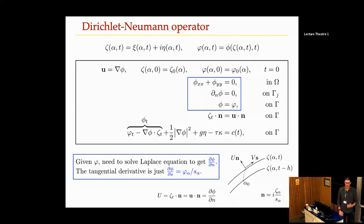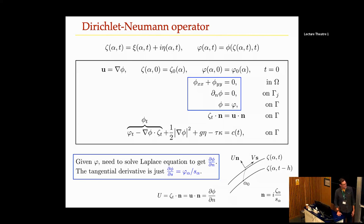I'm a big fan of the Hou-Lowengrub-Shelley framework. The fluid dynamics dictates the normal velocity of your curve, but you're free to choose the tangential velocity in any way that's mathematically or physically convenient — that's one degree of freedom you have.